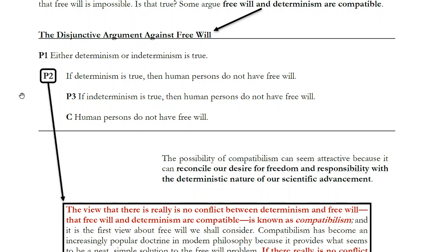Now if you accept both of those premises, then there really is nowhere to go for the idea that we can be free, or have free will, or make our own choices, or control our own destinies, if either determinism or indeterminism is true and both undermine our freedom. However, there is another very popular response I want to look at in this video, and that is the response of compatibilism.